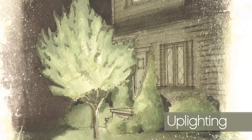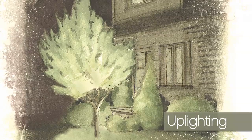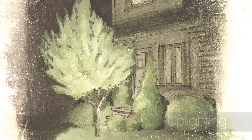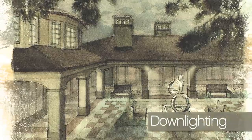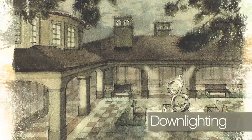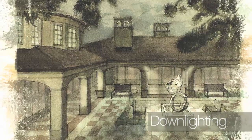Uplighting refers to illuminating an object, area, or surface from below. Downlighting describes the illumination of an object, area, or surface from above.